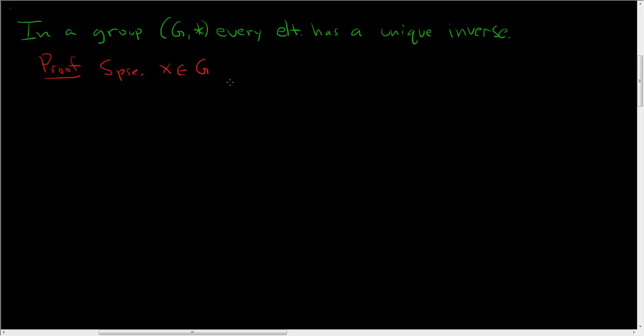Now to show that x has a unique inverse means that we have to show that if we have two inverses, they are indeed the same. So suppose x is in G, and y1 and y2 are both inverses of x.